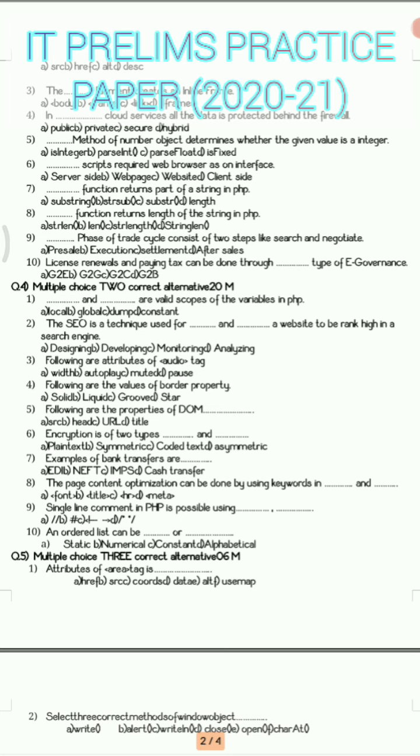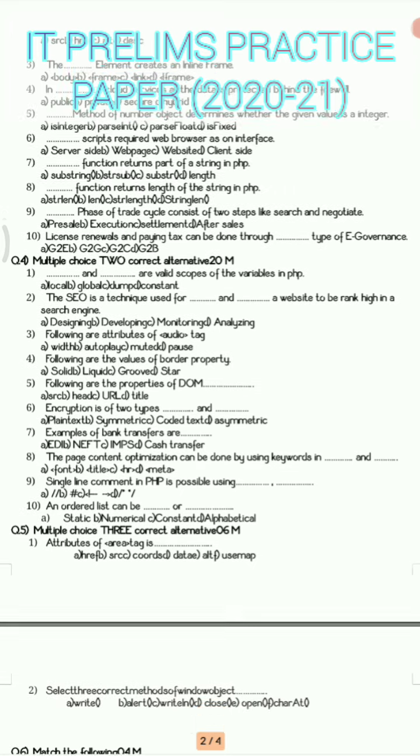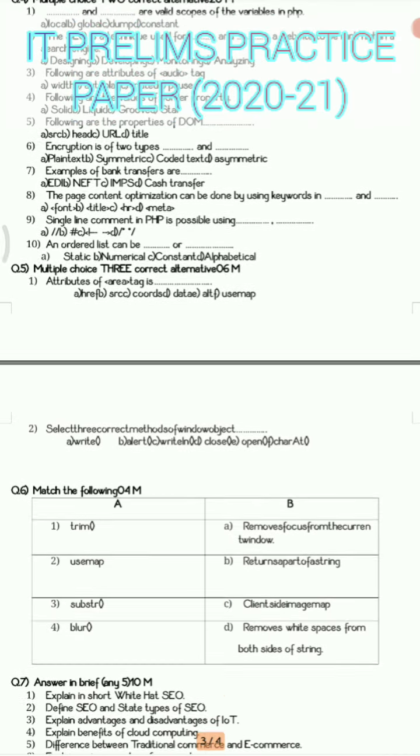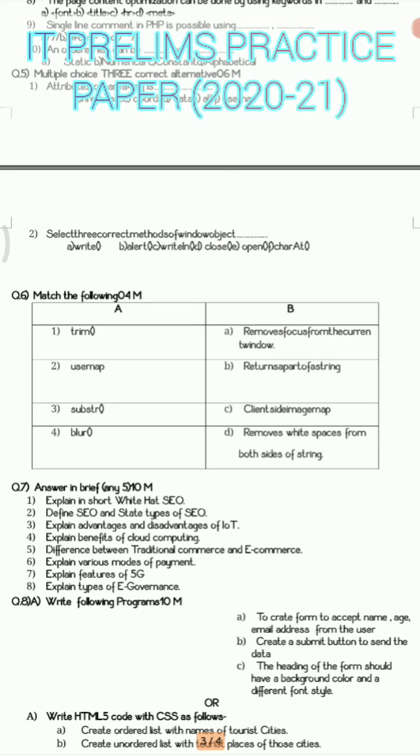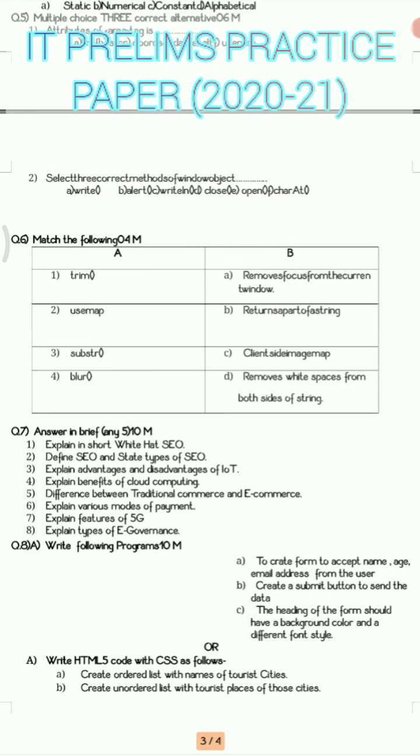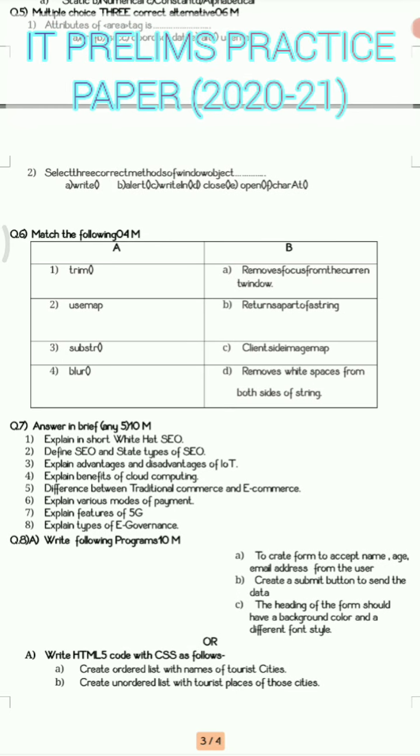After that we have question 5 with multiple choice question with alternative three correct options. Here you have three correct options, so only two questions will be allotted to you and it will carry six marks, means one question carries total three marks. After that we have match the pairs. Match the following is for four marks, you have two columns like column A and column B, you just need to match them.